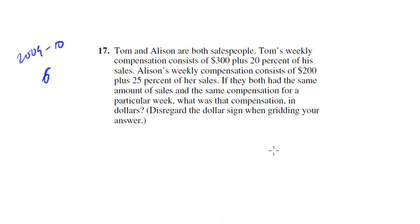Let's look at number 17, another hard. This one, though, is a hard grid-in. Tom and Allison are both salespeople. Tom's weekly compensation consists of $300 plus 20% of his sales. Allison's weekly compensation consists of $200 plus 25% of her sales. If they both have the same amount of sales and the same compensation for a particular week, what was that compensation in dollars? So we want to get their compensation. Again, another long problem. Let's take it sentence by sentence.